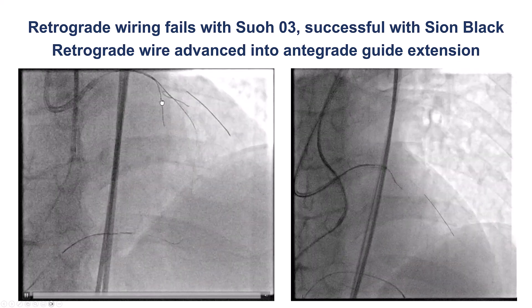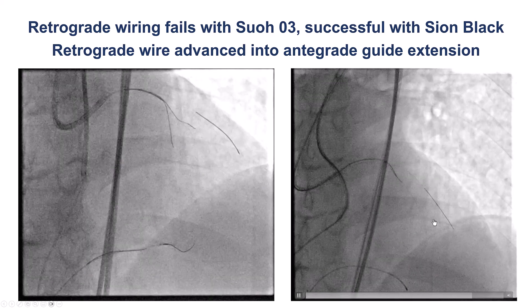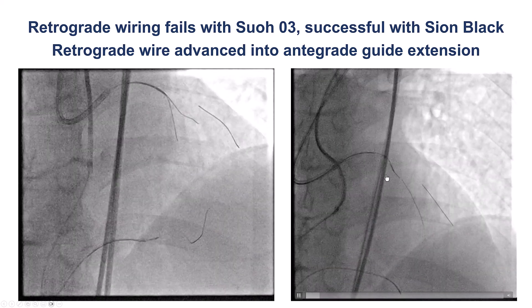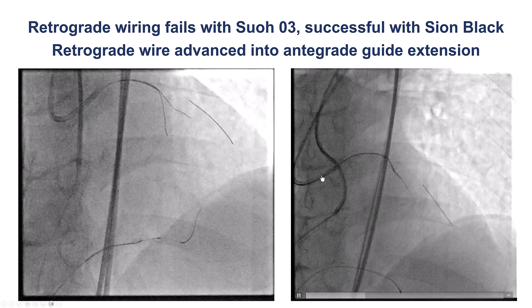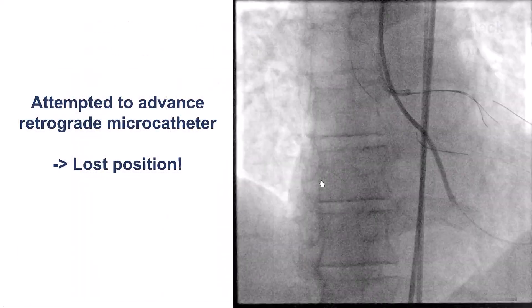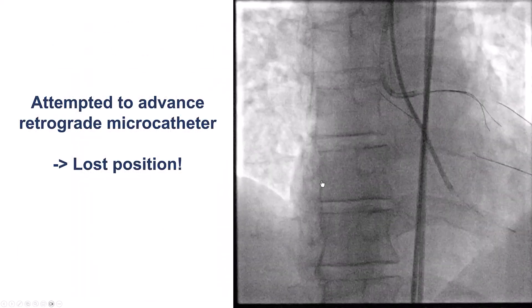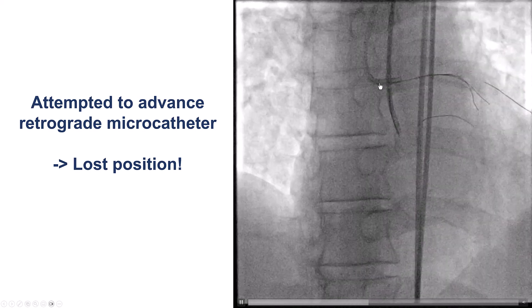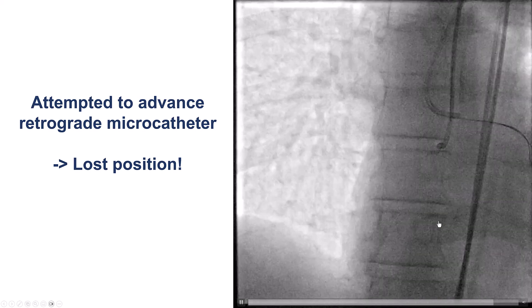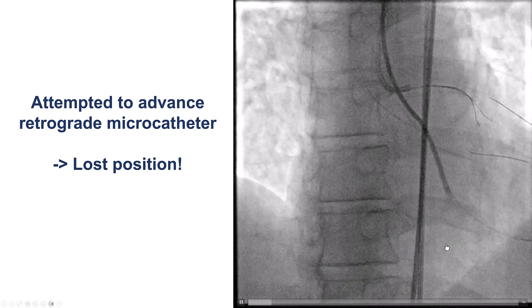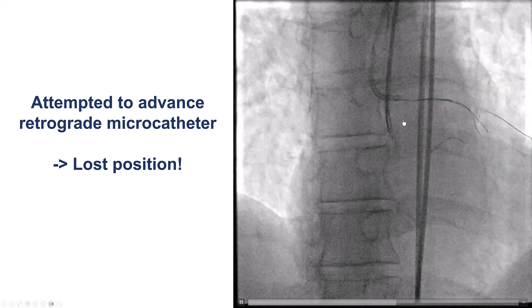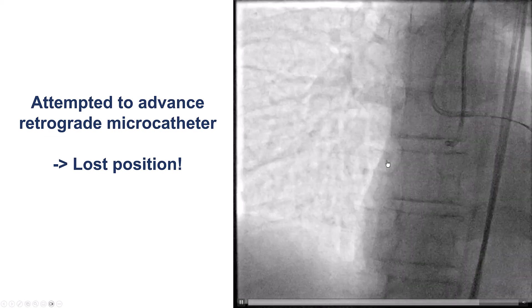To our surprise, this retrograde wire easily crossed through the occlusion and went into the antegrade guide catheter. However, despite trapping the retrograde wire into the antegrade guide catheter, we couldn't get the retrograde microcatheter to track. In the process, we lost our position.